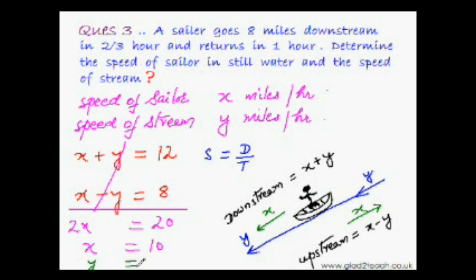And y would be equal to, put this 10 here. So y equal to 12 minus 10. That is 2, question solved. Speed of the sailor in still water is 10 miles per hour and the speed of the stream is 2 miles per hour.